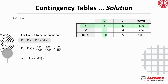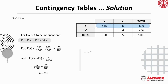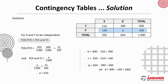Next, let's find the probability of X and Y, which is A over 1000. These will be equal if X and Y are independent, so by equating these we can solve for A. Once we have A's value, we can find B by subtracting A from 600, then C by subtracting A from 350, and finally D in two ways — either from subtracting B from 650 or by subtracting C from 400. It's a good idea to find it one way and then check by finding it the other way.